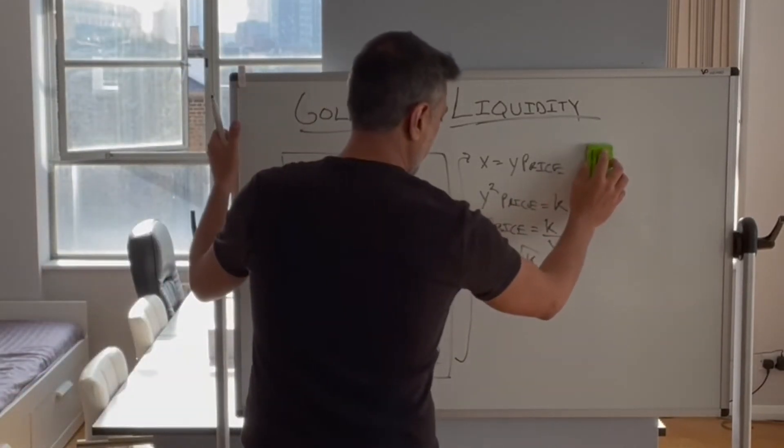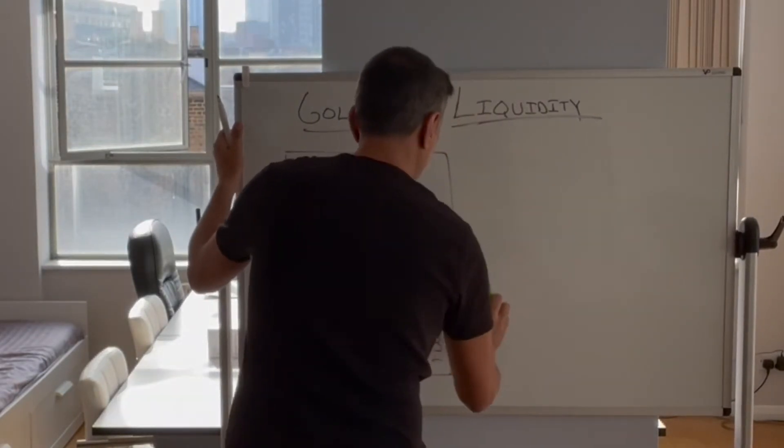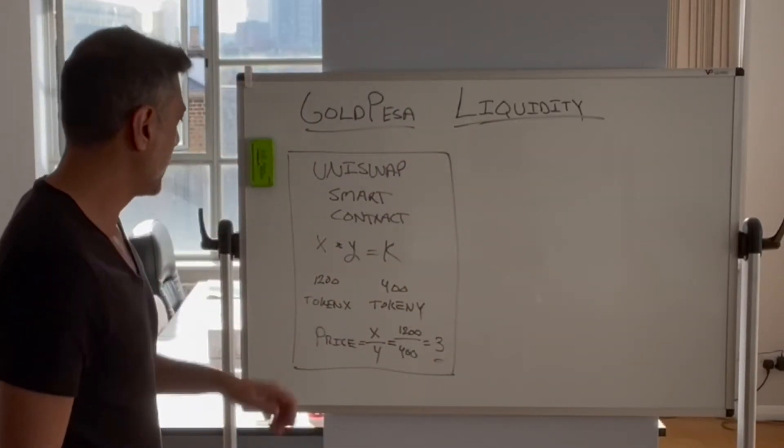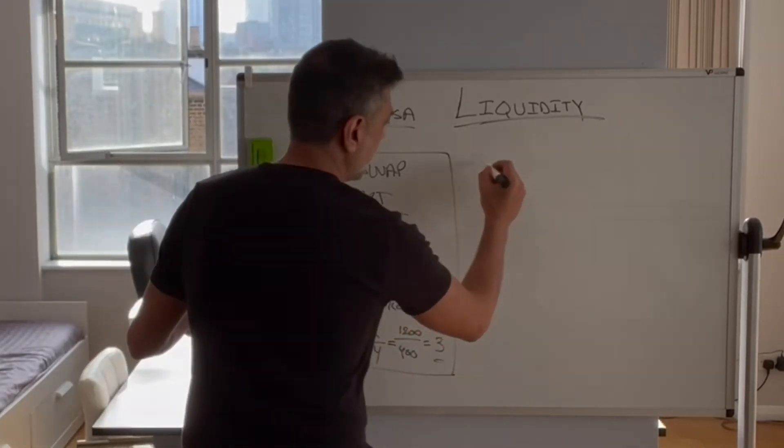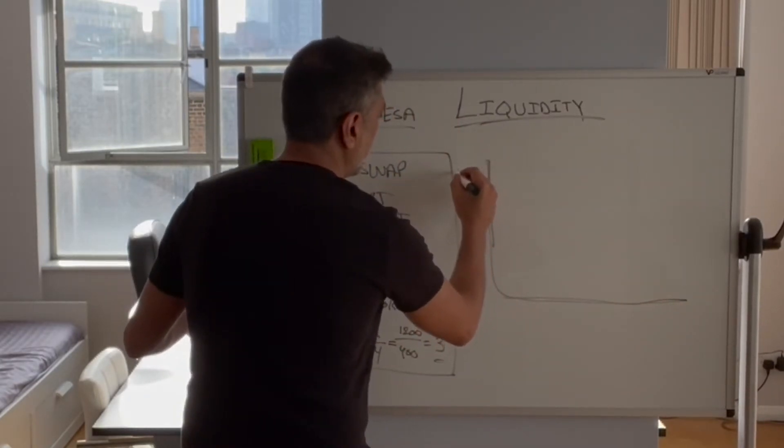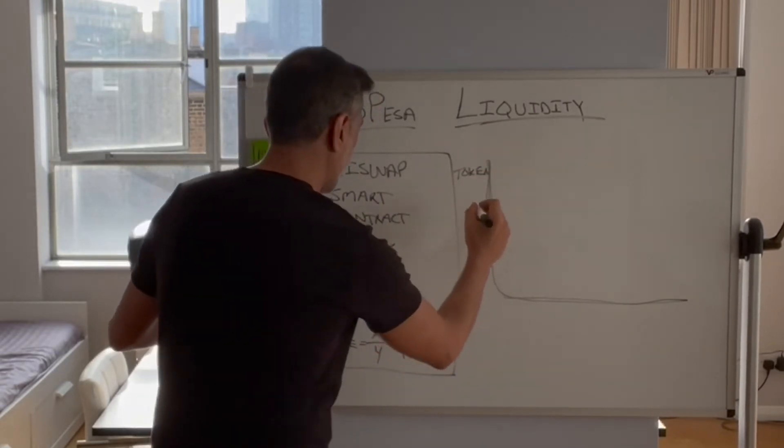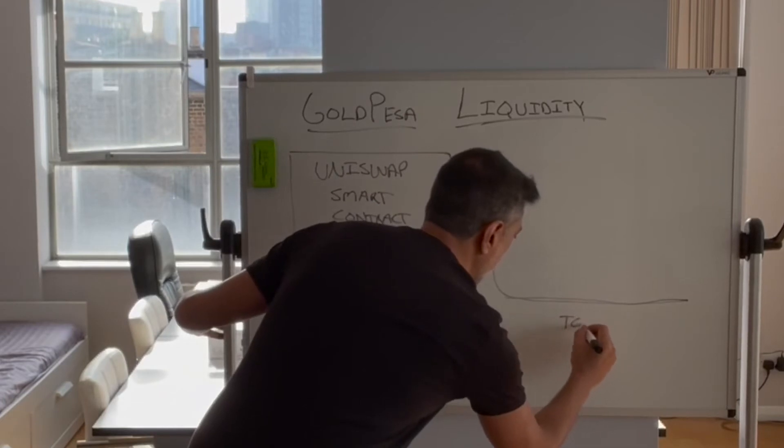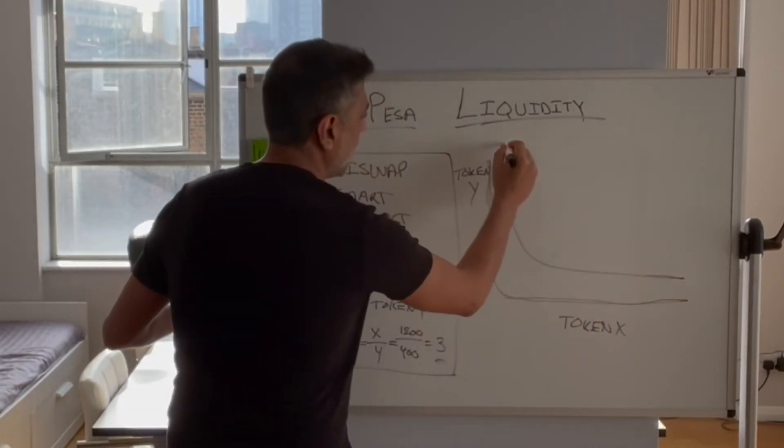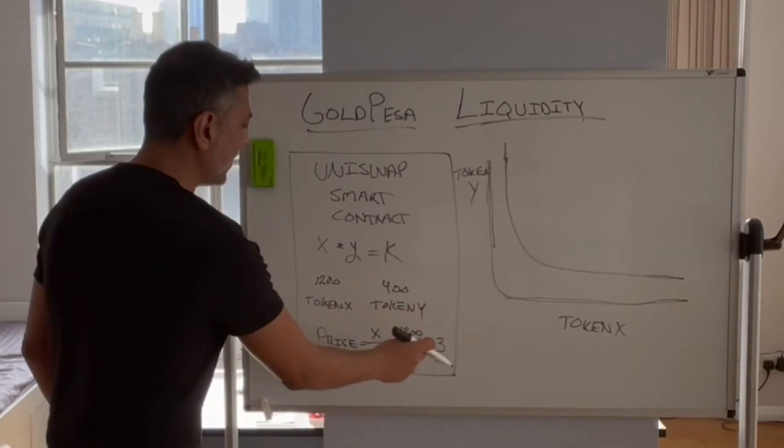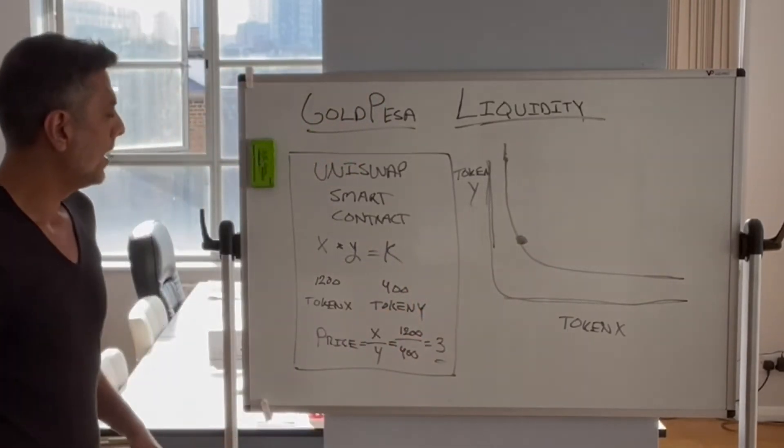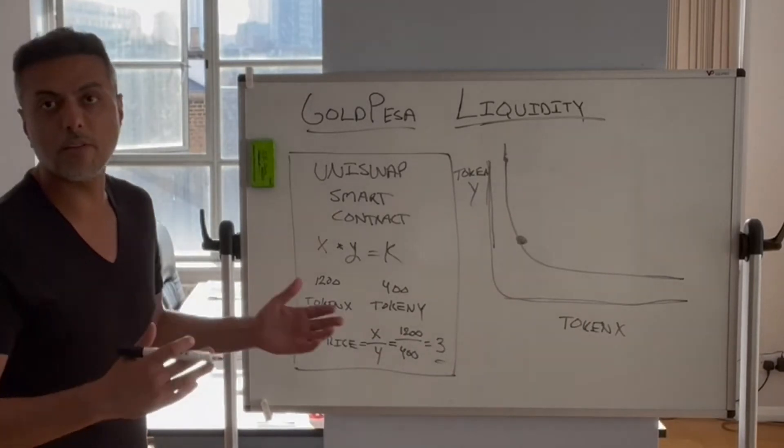So this price curve is defined as follows. This here is token y. This here is token x. And the price curve is as follows. When you're starting off at this 1200 tokens of x and 400 tokens of y, maybe you're somewhere around here when you start off. And the price is $3 or whatever your pair is.